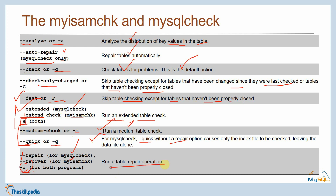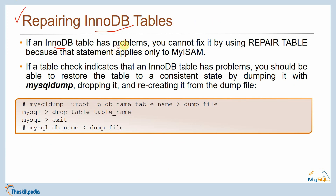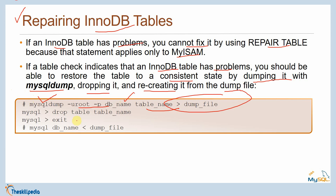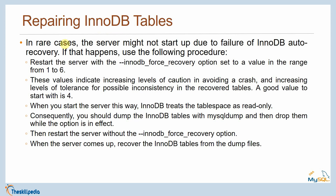If an InnoDB table has problems, you cannot fix it with REPAIR TABLE because that statement applies only to MyISAM. If a table check indicates an InnoDB table has problems, you should restore it by dumping it with mysqldump, dropping it, and then recreating it from the dump file. The procedure is: dump the table using mysqldump with username, password, database name, and table name to create a dump file, then drop the table and import it again.